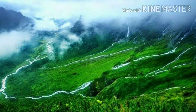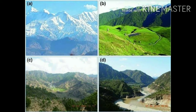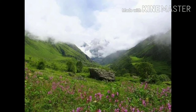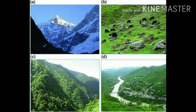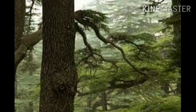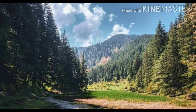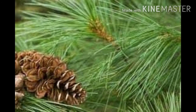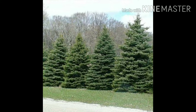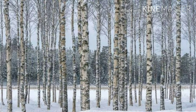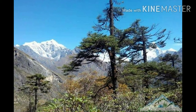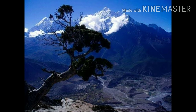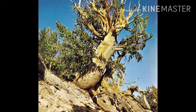Temperate forest and grassland gradually decrease at 3600 meters of height. At 3600 meters above sea level, alpine vegetation is found, which mainly includes birches, pines, junipers, and silver fir. The growth of trees becomes stunted as they near the snow line.